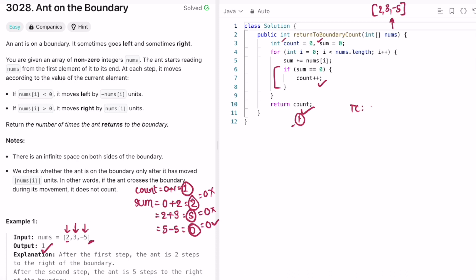So the time complexity of this approach is O(n) where n is the length of the input array nums. The space complexity is O(1) because we are not using any extra space to solve this question. That's it guys. Thank you for watching and I'll see you in the next video.